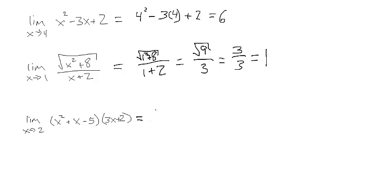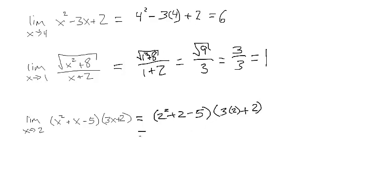The limit as x goes to 2 of (x² + x − 5) gives us 2 squared + 2 − 5. That's 4 + 2 = 6, minus 5 equals 1.